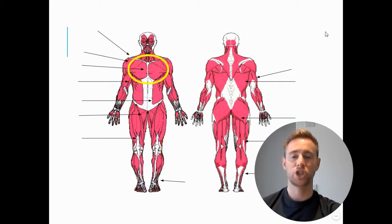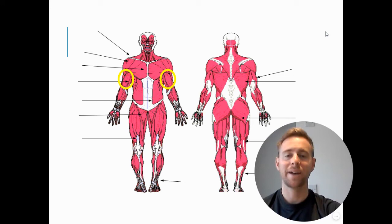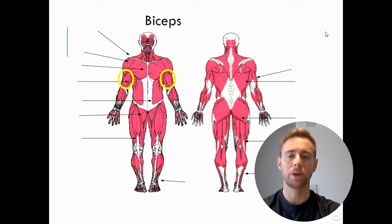We then have the main muscle in our chest which is the pectorals. We then have the muscle on the front of our arm between the elbow and the shoulder, and that is the biceps.